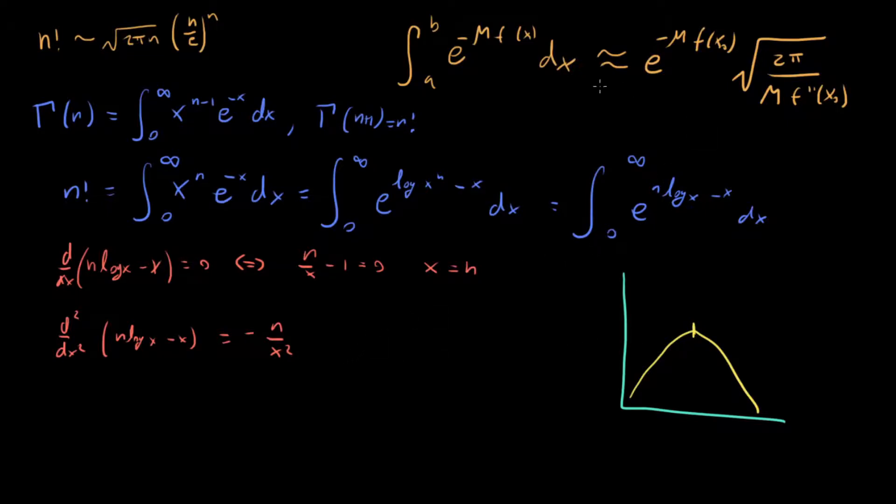So we've done it. We're ready to plug this in. And what do we get when we plug it in? n factorial is approximately equal to, and then what do we have here? We have e to the minus m f of x naught, that's going to be equal to n log n minus n times square root 2 pi divided by m f double prime of x naught.